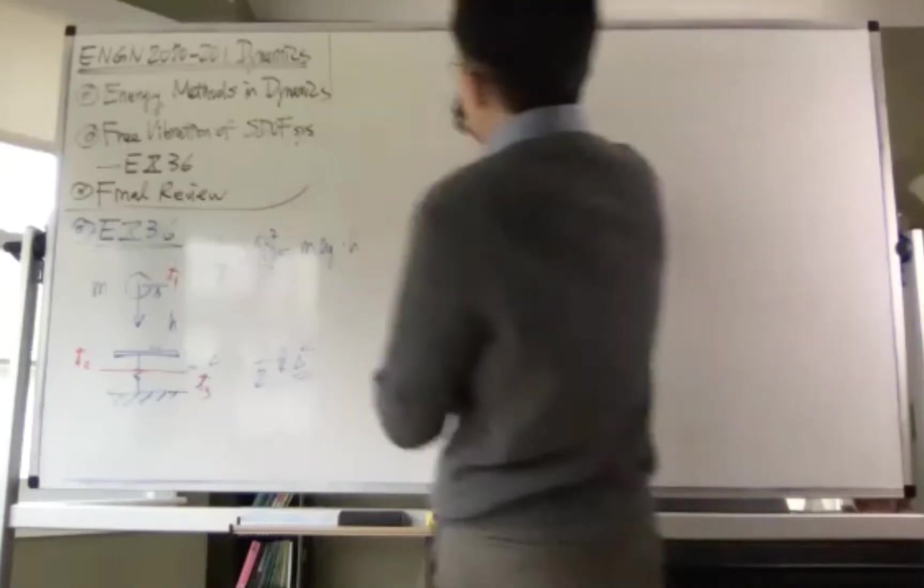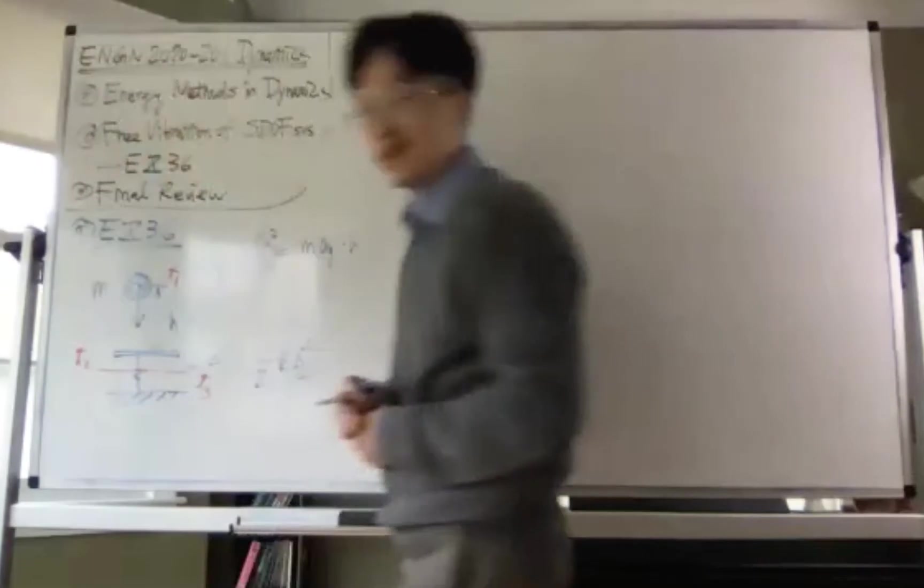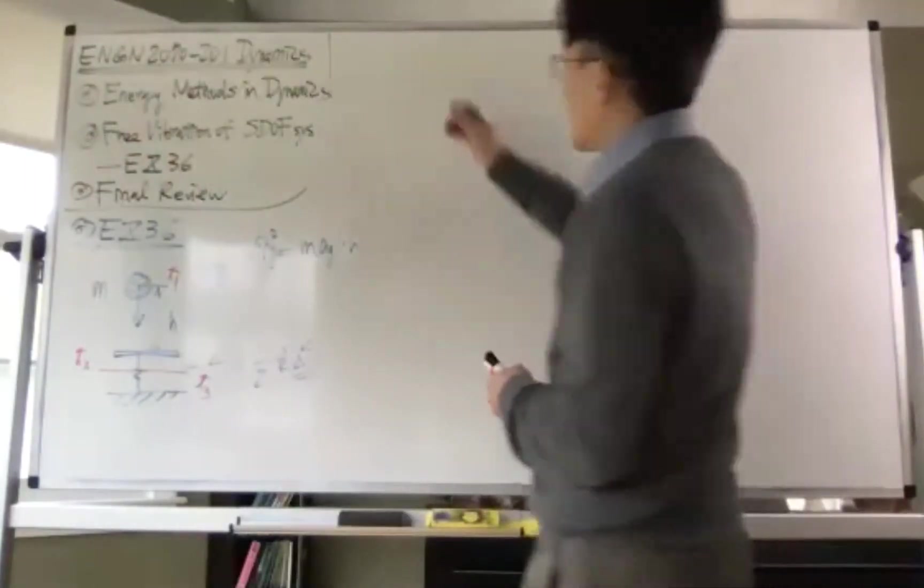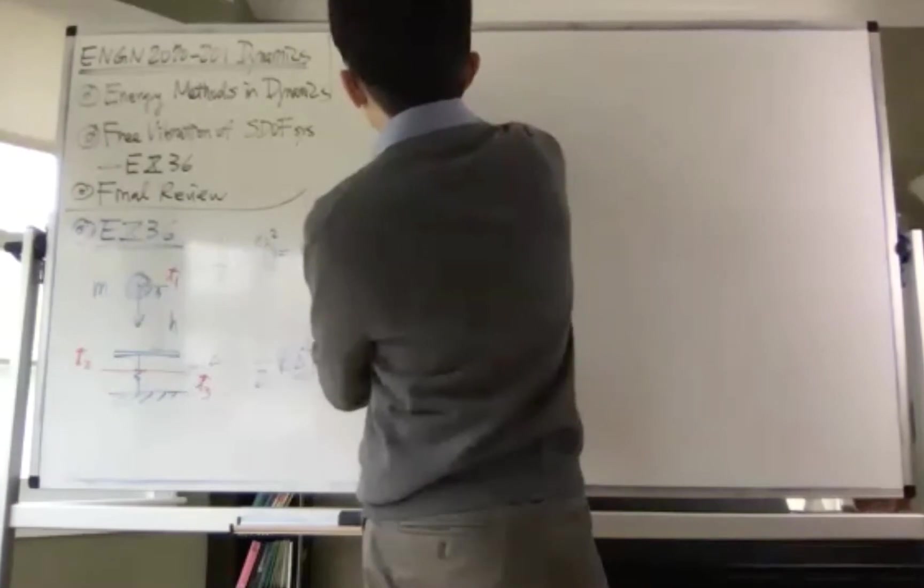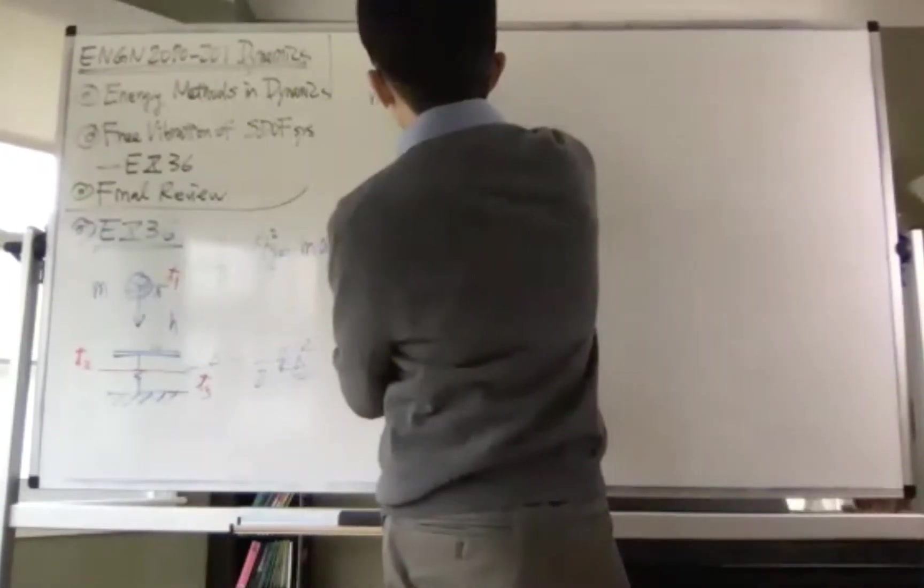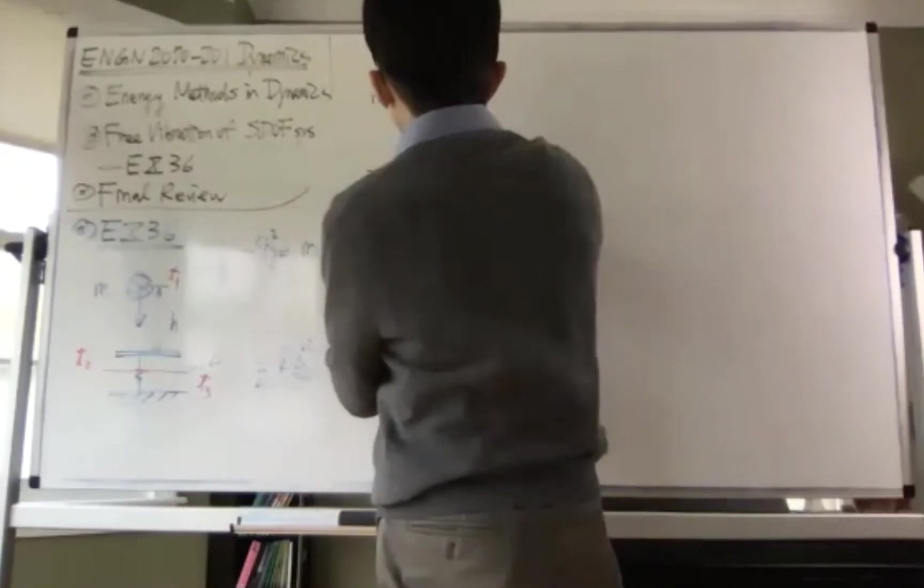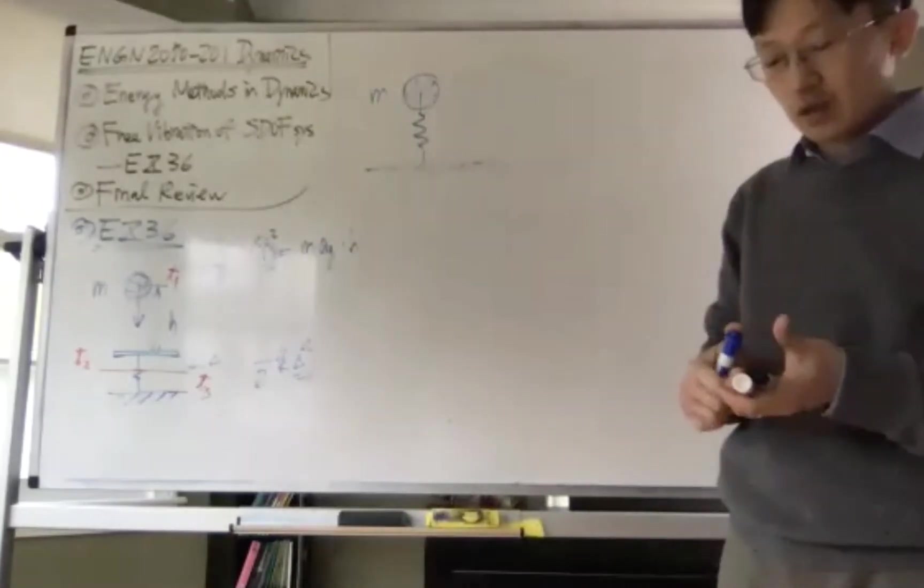So how do I solve this problem? So let's consider not the ball dropping on the spring, because this is boring. We already did it before. Let's consider this. Suppose I have the ball, I still have the mass here. Now I want to attach to a spring.